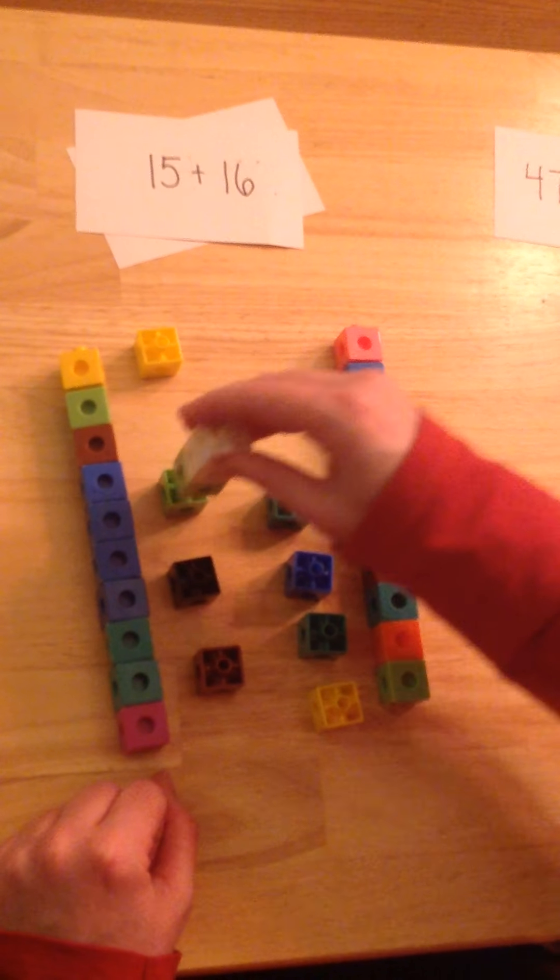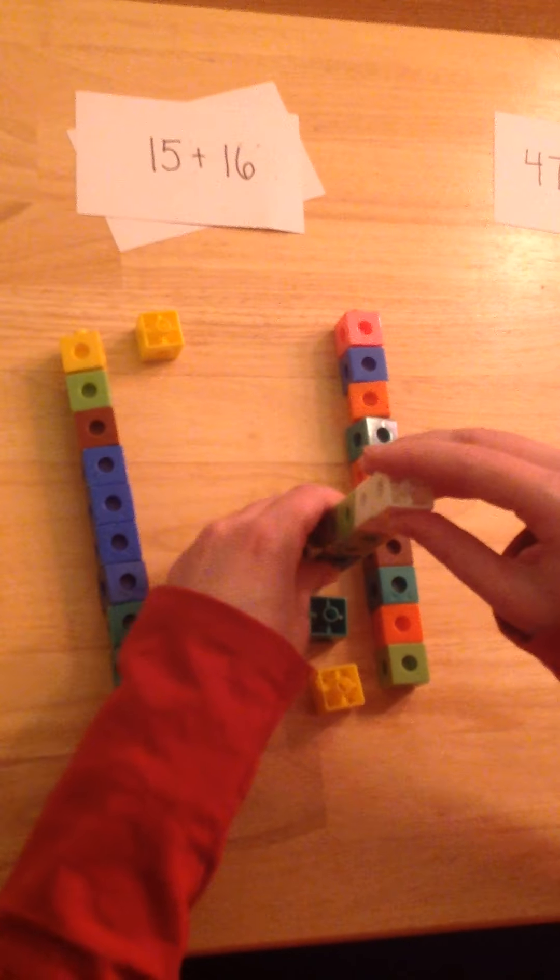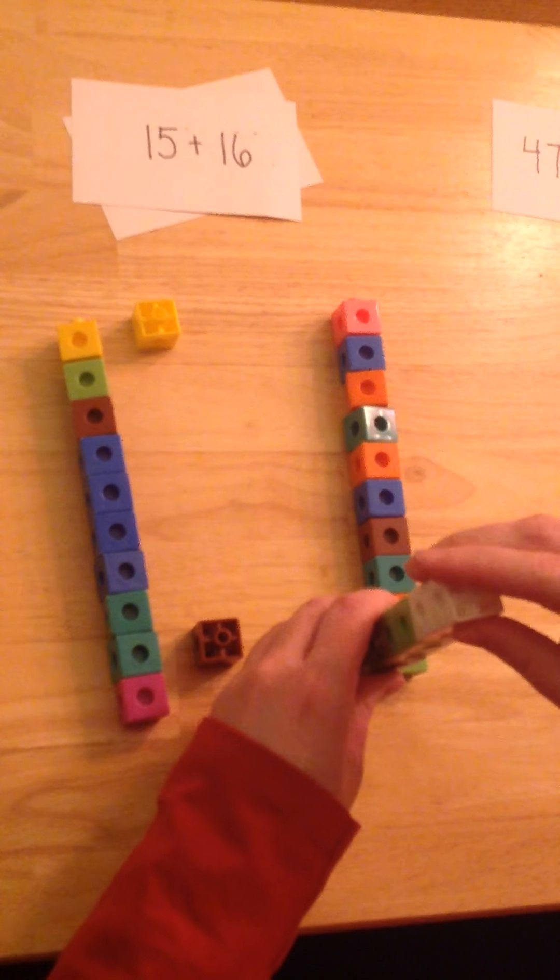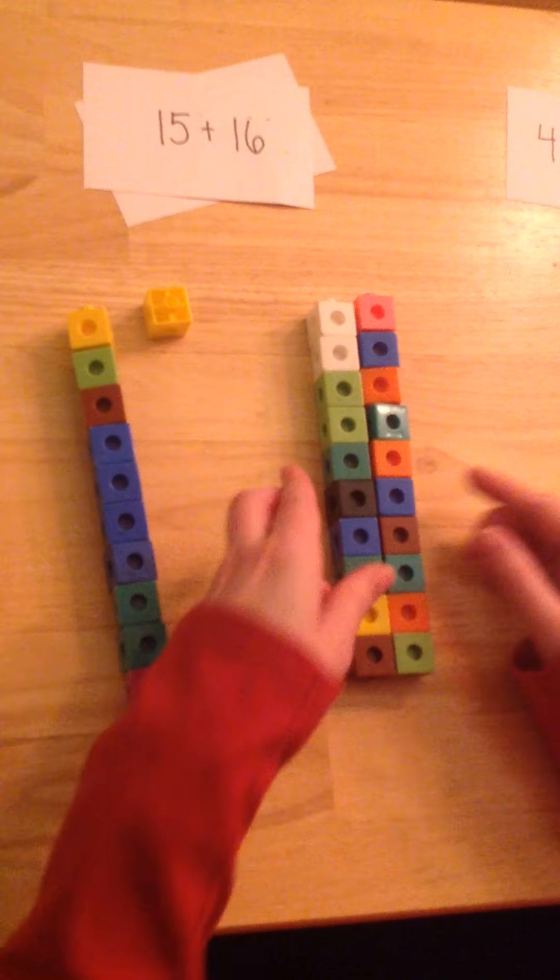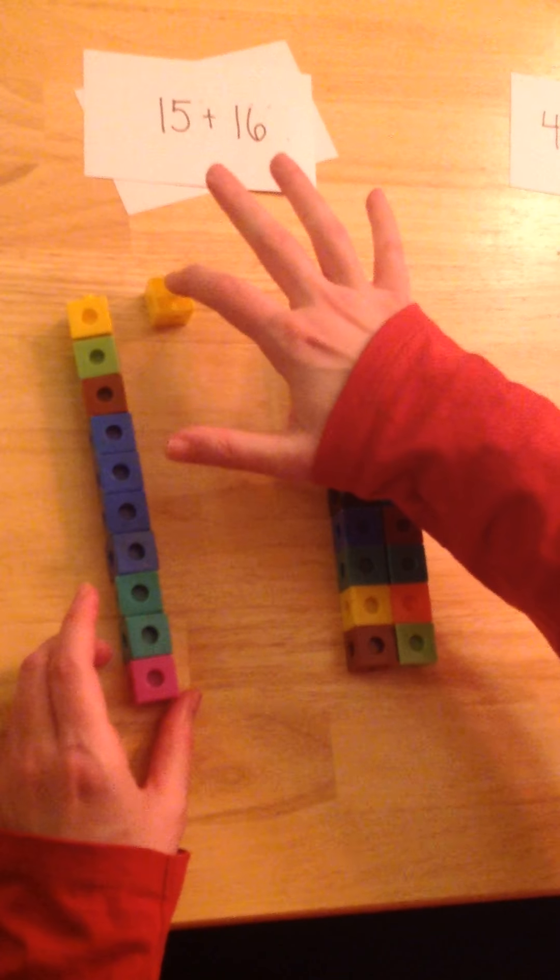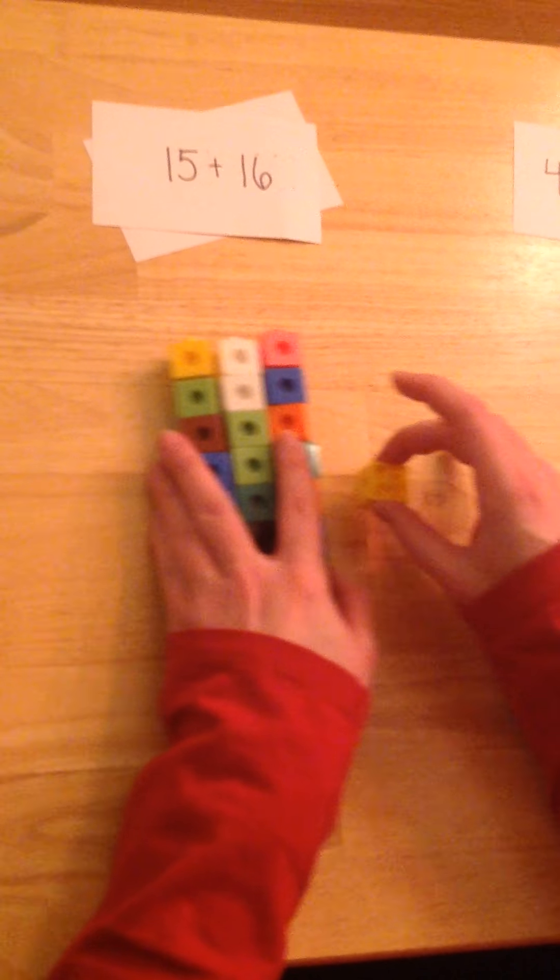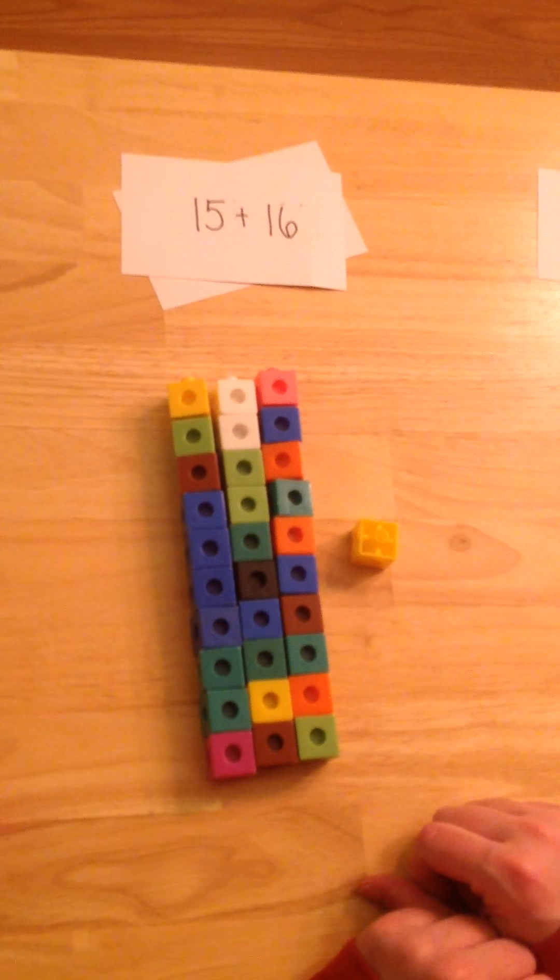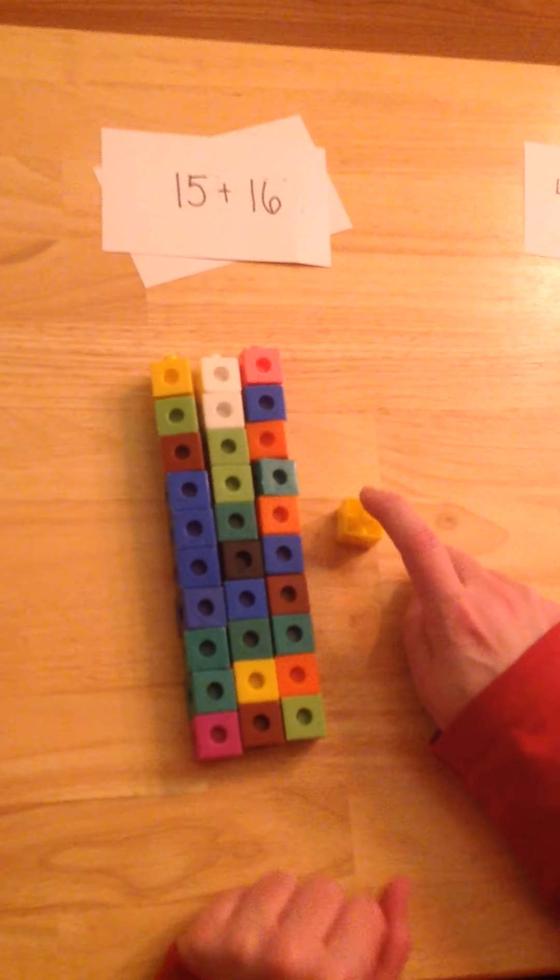I have 10 1s. So I'm going to make those a new 10. See how it's the same size as my other 10? I'm not going to put this on because this was more than 10, but this will be our extra 1 that's left over. So 15 plus 16 equals 10, 20, 30, 31.